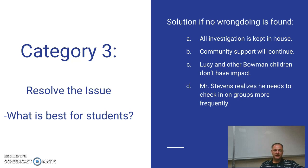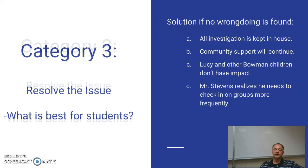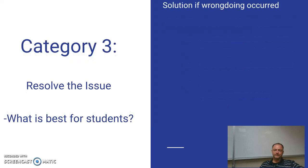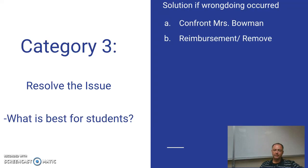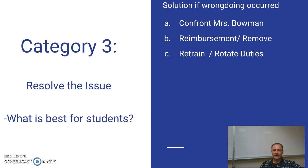Mr. Stevens didn't go around and check on groups very much, and he needs to do that — if those tickets were torn, it probably would have been mentioned to him that night. If wrongdoing occurred, what's best for students is to confront Mrs. Bowman, get reimbursed, and remove her, ensuring the total funds for students remain constant and preventing potential theft in the future. Retraining all staff ensures everyone is properly handling things and rotating duties, adding extra safeguards so students benefit from all funds being raised.